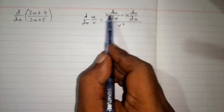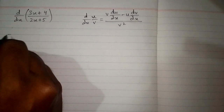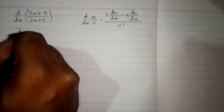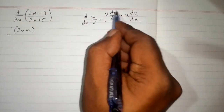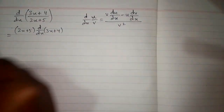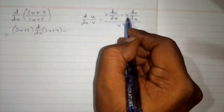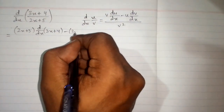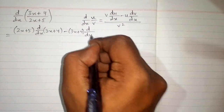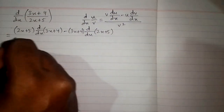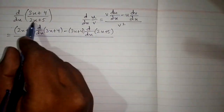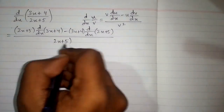So we will put the values of u and v in this formula. We have 2x + 5 in place of v, so first we will write 2x + 5. Then the derivative of u, which is d/dx of (3x + 4), then a minus sign, then we will write u which is 3x + 4. Then we will write the derivative of the denominator which is 2x + 5, and in the denominator we will write v squared, so we will write (2x + 5) whole square.